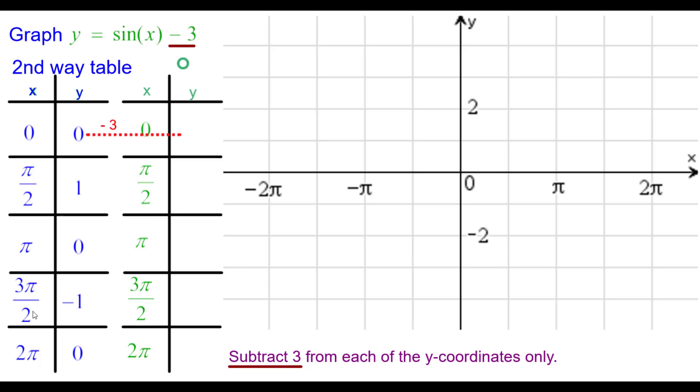So let's go ahead and subtract 3 from this y-coordinate. 0 minus 3 is negative 3. So we'll plot the ordered pairs 0, negative 3. 1 minus 3 is negative 2. So at pi over 2, down 2. 0 minus 3, again, is negative 3. Over pi, down 3. Negative 1 minus 3 is negative 4. So at 3 pi over 2, negative 4. And 0 minus 3 is negative 3. 2 pi, negative 3.